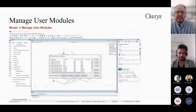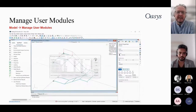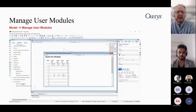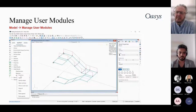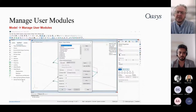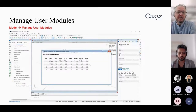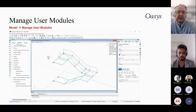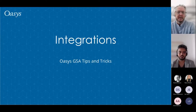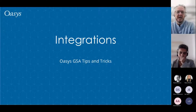An example of custom user modules: on a Singapore glazed dome project, the team wanted to display the slope of each cladding panel in GSA. They calculated this externally, created a user module, imported it into GSA, and displayed their own results on the graphical view.